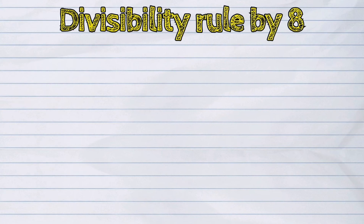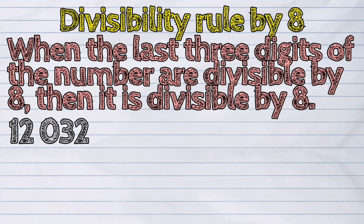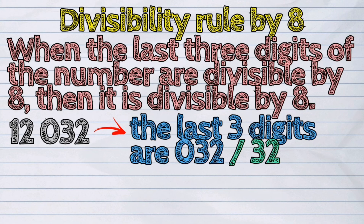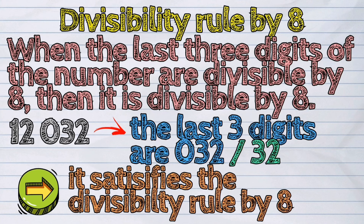Divisibility rule by eight: when the last three digits of the number are divisible by eight, then it is divisible by eight. For example, in 12,032, the last three digits are 032, or just 32. 32 is divisible by eight, so this number satisfies the divisibility rule by eight.